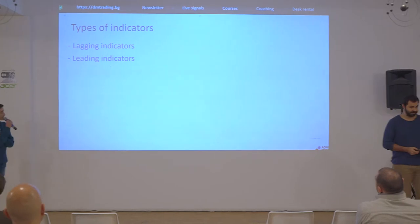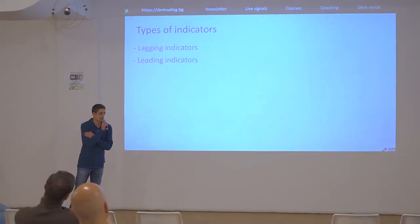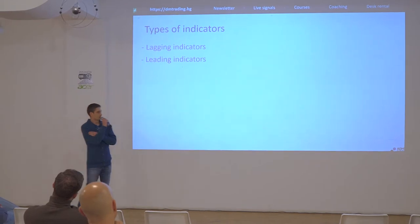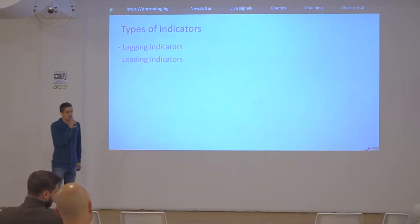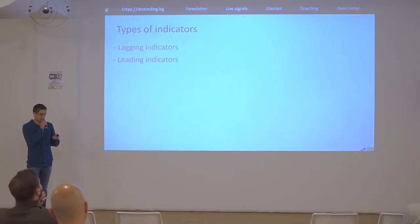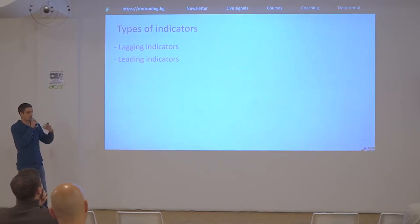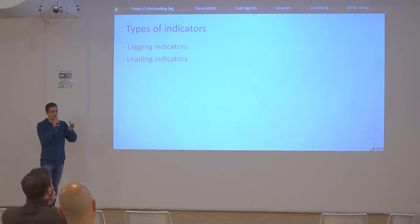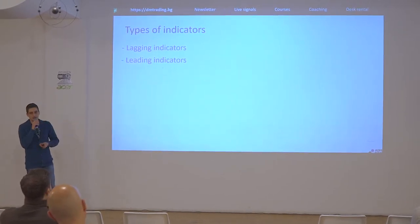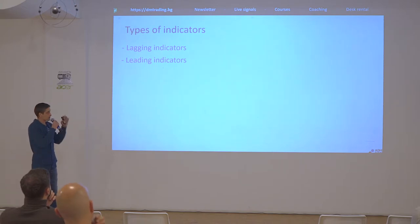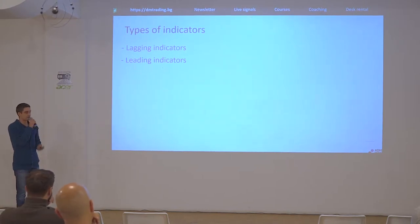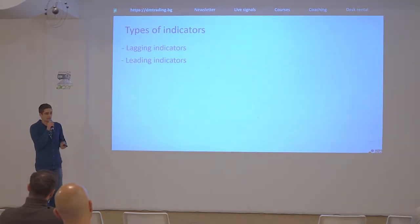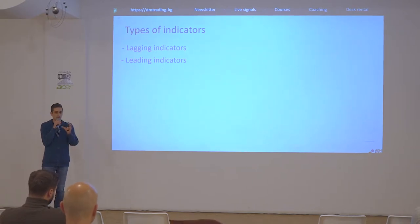So, basically, what an indicator is — the most basic explanation — it is just a mathematical formula which is visualized on your chart using lines, bars, or other types of graphs. The most important thing to know is that there are two main categories of indicators: lagging indicators and leading indicators.